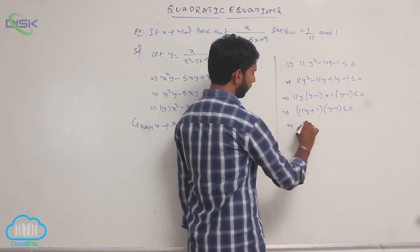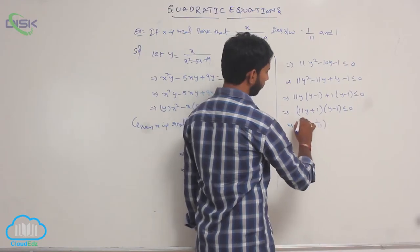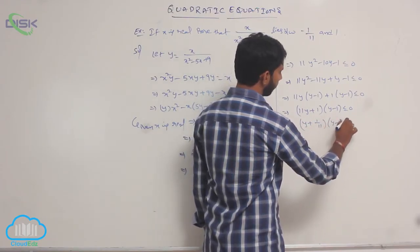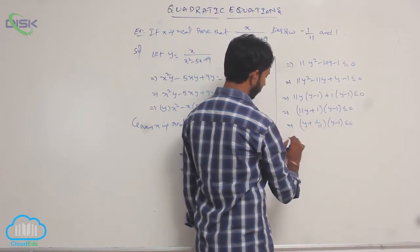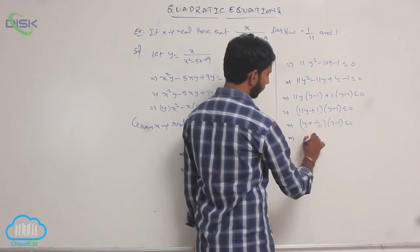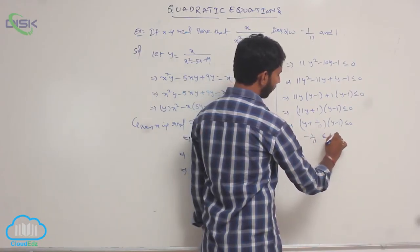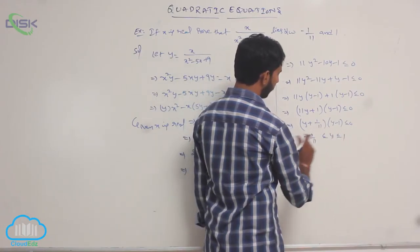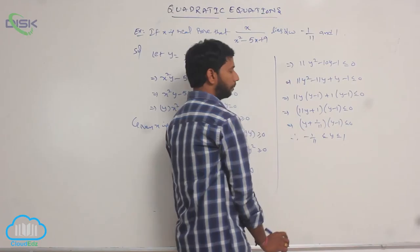This implies (y + 1/11)(y - 1) ≤ 0, which gives -1/11 ≤ y ≤ 1.